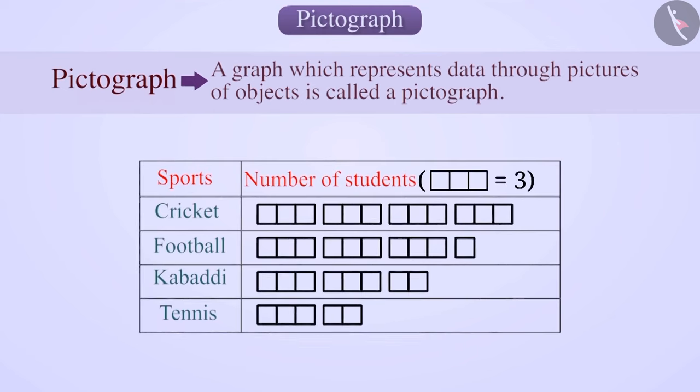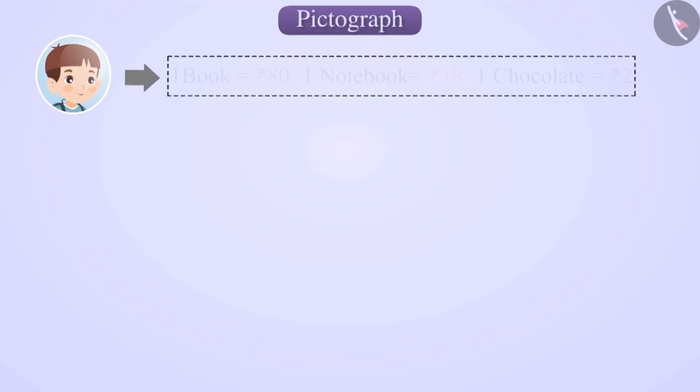Let's review it by using an interesting example. Suppose Rahul went to a shop and bought a book worth Rs. 80, a notebook for Rs. 18, and a chocolate for Rs. 2.